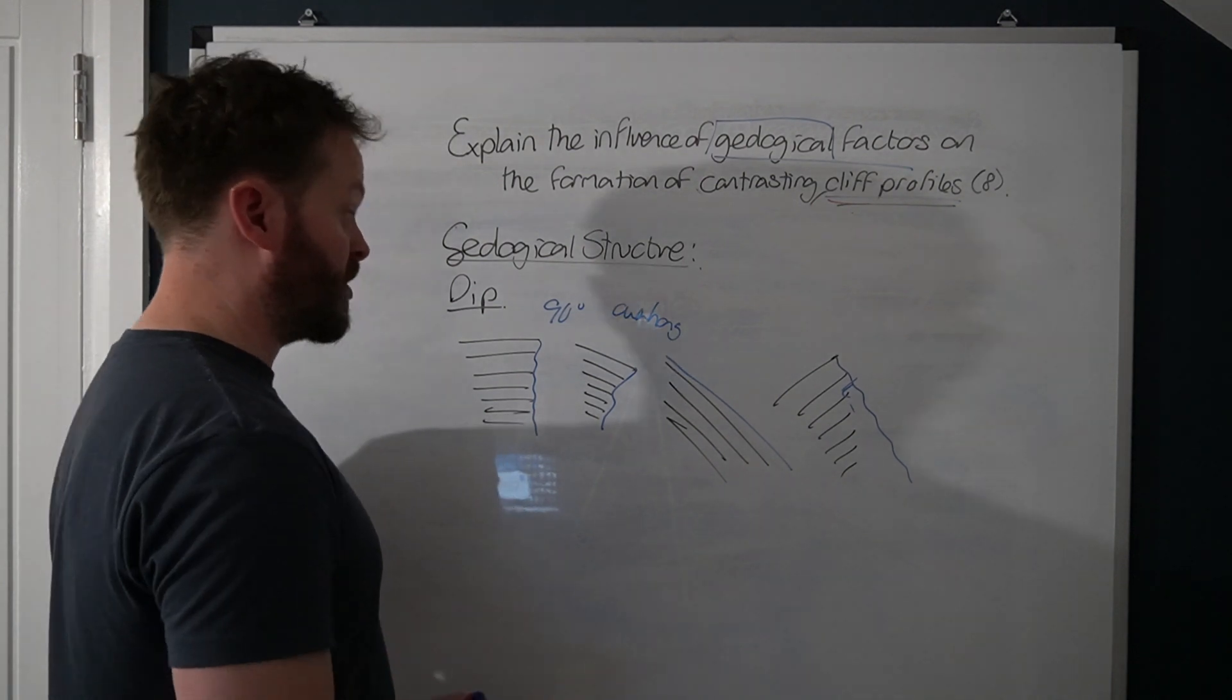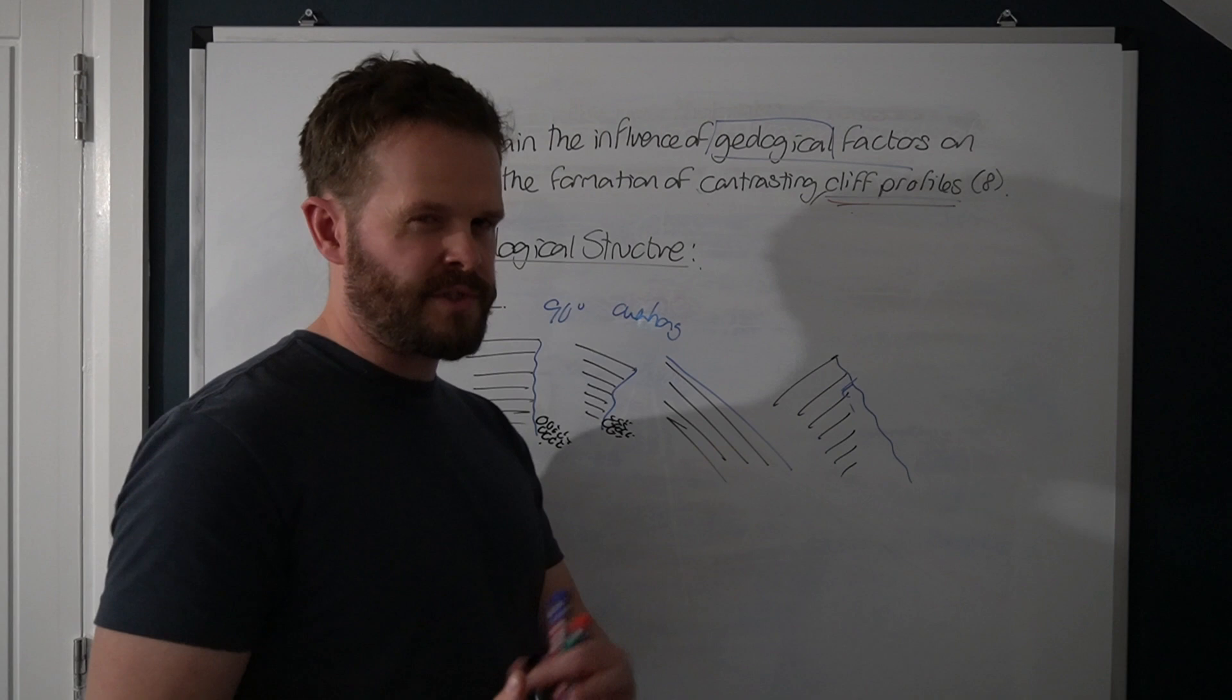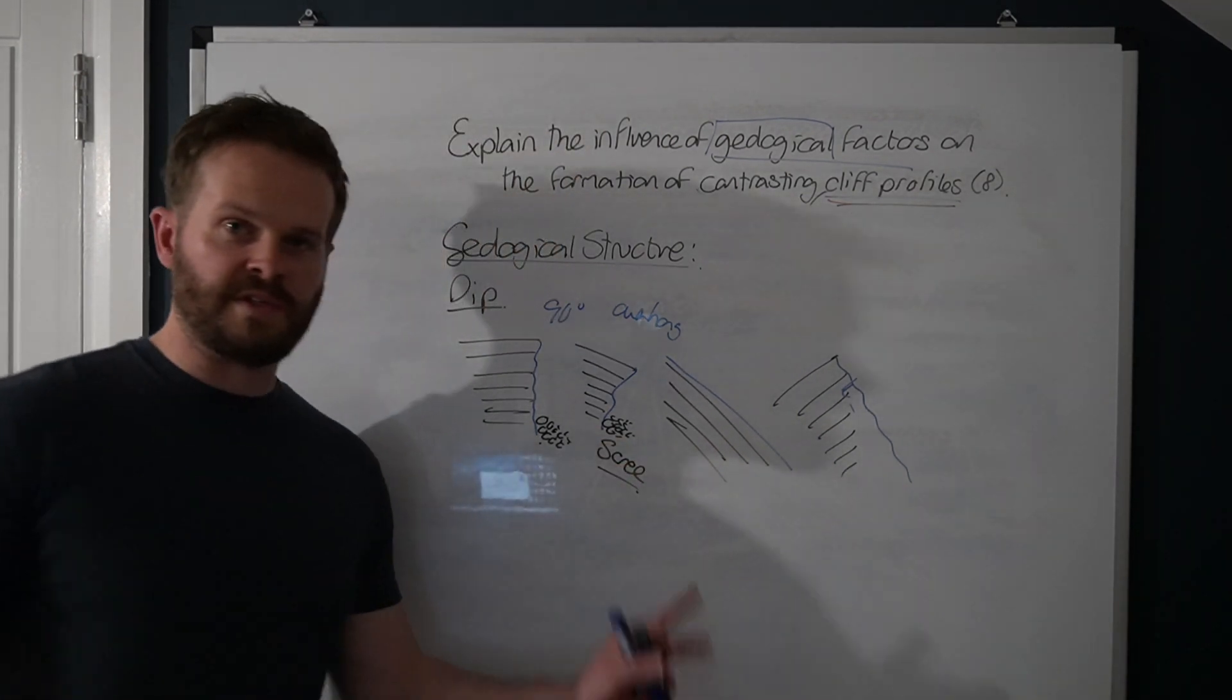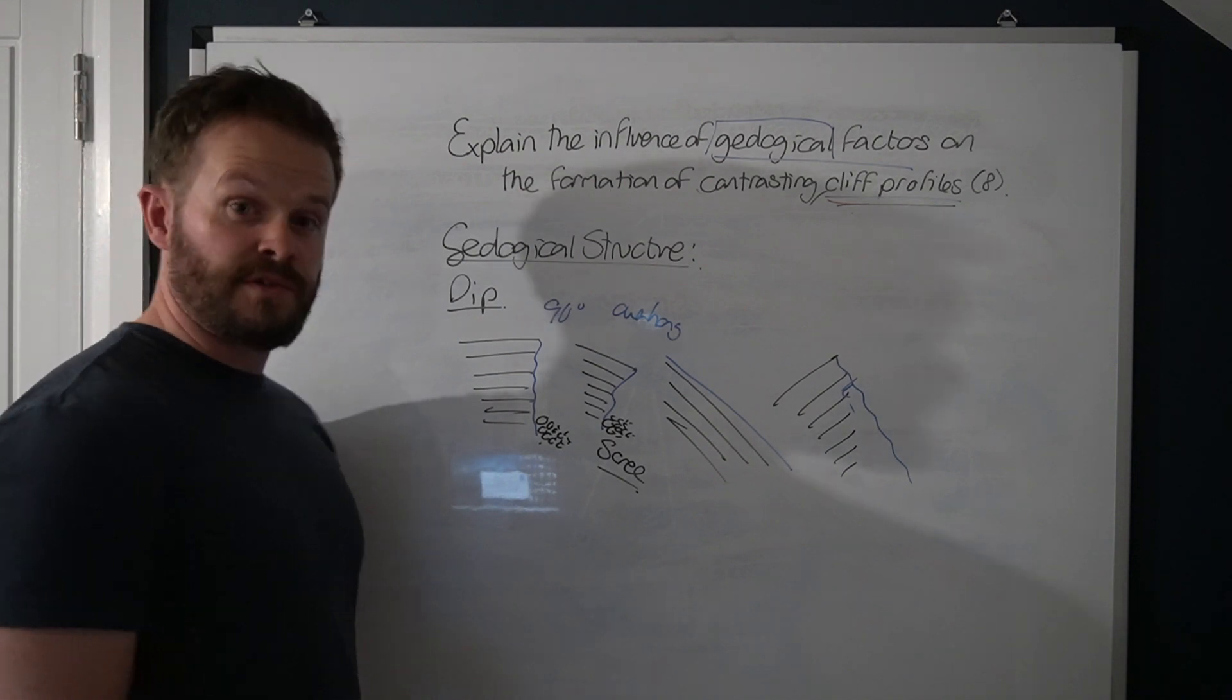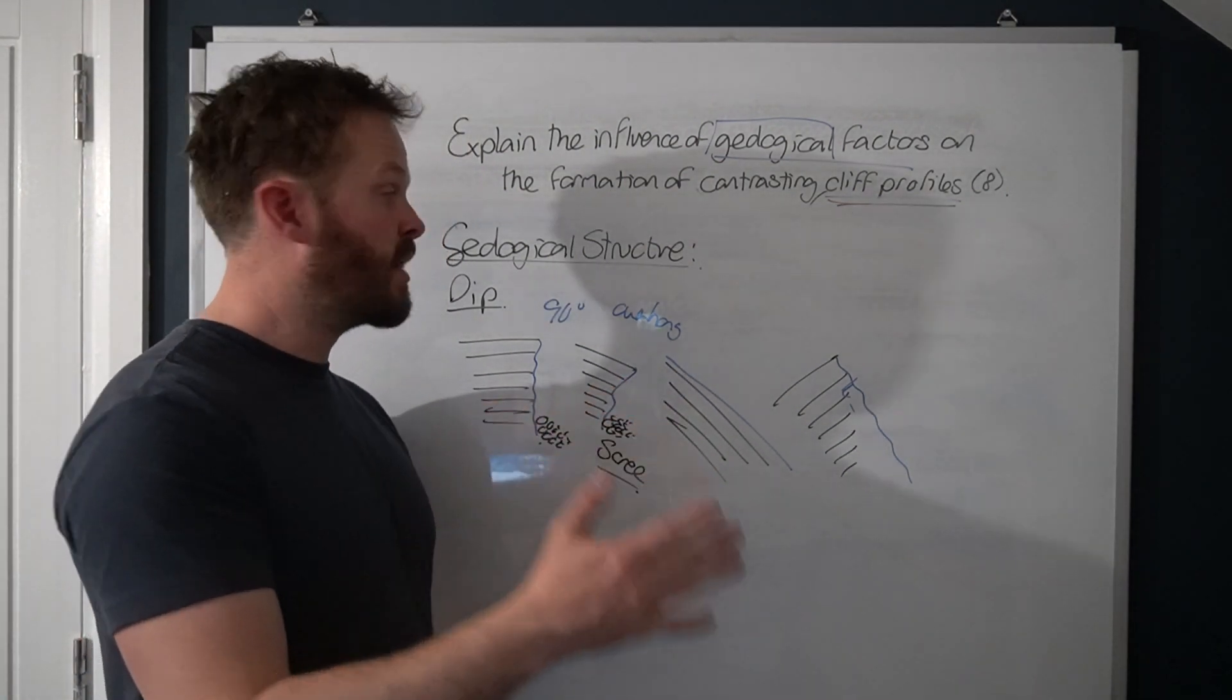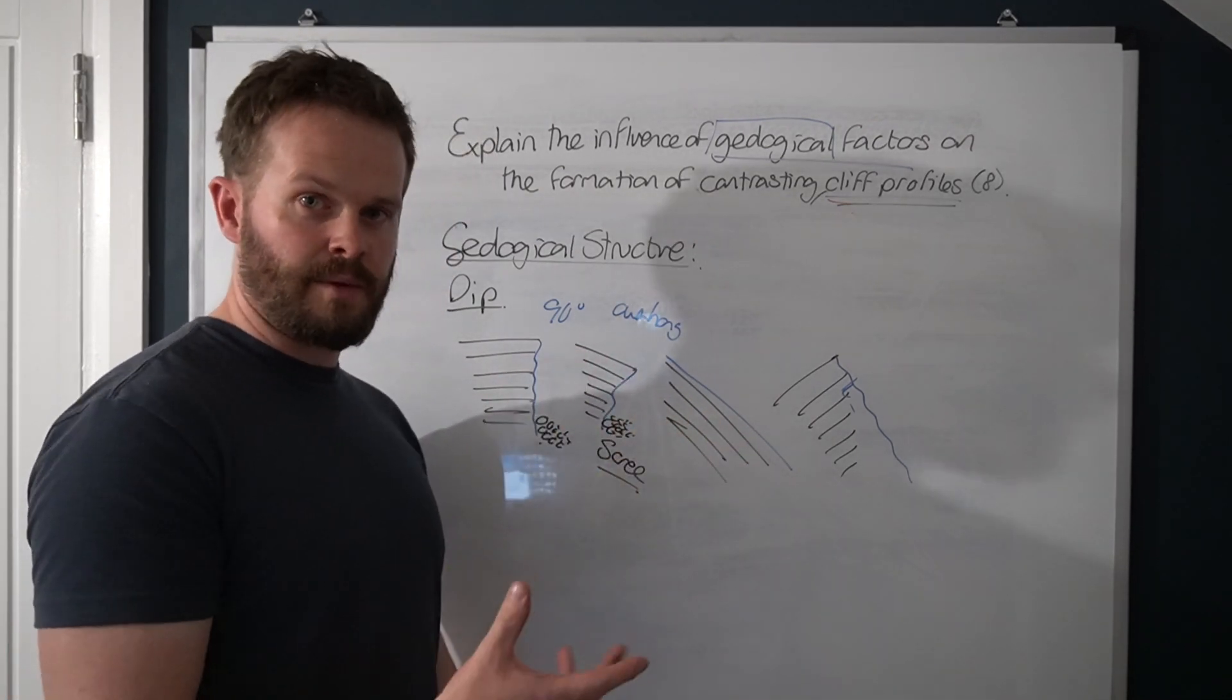What are some things that we can comment on? Well, usually here and here, and we can comment on this as part of the profile, we'll see some scree. That's another way the geological structure can relate to a different profile. So far what we've got is three paragraphs on the angle of the cliff face, or the shape of the cliff face and how it looked.